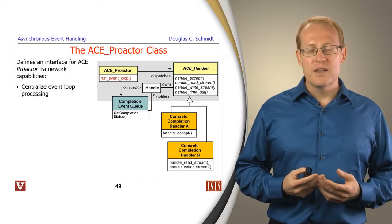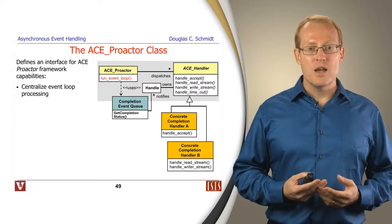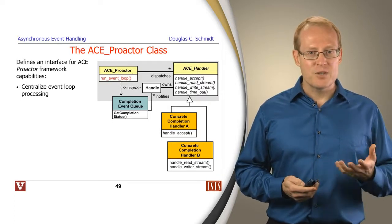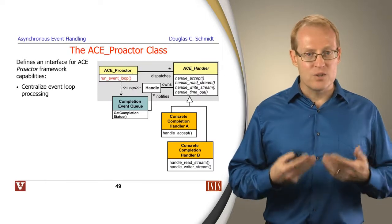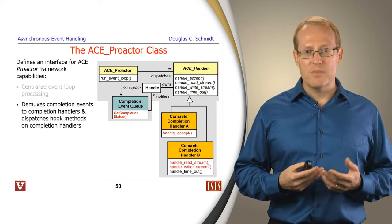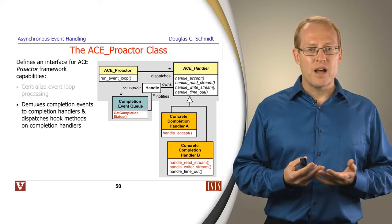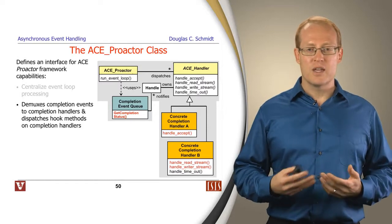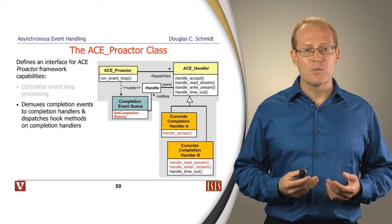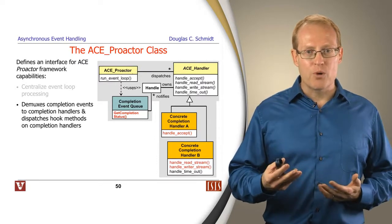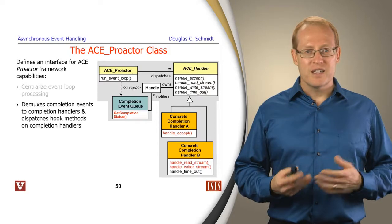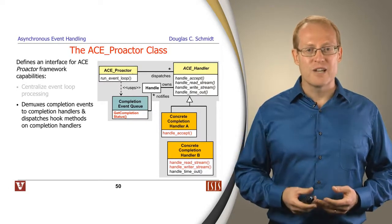The final piece of the puzzle brings it all together. This is the ACE Proactor class. Much like ACE Reactor, it's the class that runs the event loop. It centralizes the event loop processing by providing methods to run the event loop, either indefinitely or one at a time. It provides a way to demultiplex completion events that come in from the underlying completion event queues, things like IO completion ports on Windows and other similar mechanisms on POSIX platforms, and get those dispatched back to the appropriate completion handler that knows what to do in response to the completion of events, such as kick off an asynchronous read call or another asynchronous write call.